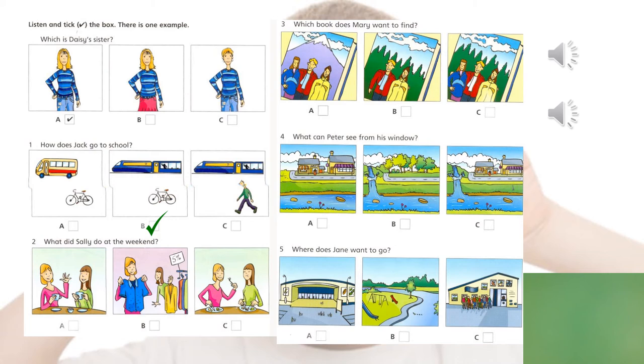Number two. What did Sally do at the weekend? She went out with a friend. They were at a cafe, but they didn't eat anything, they just had a drink. So which letter do you think is the correct one? Letter A.